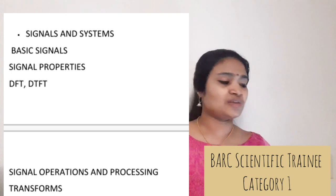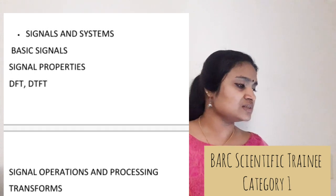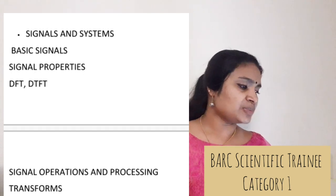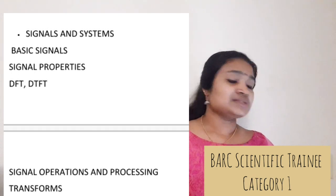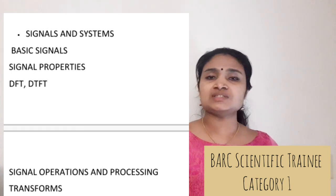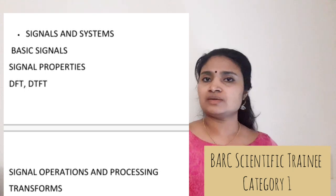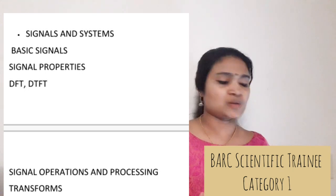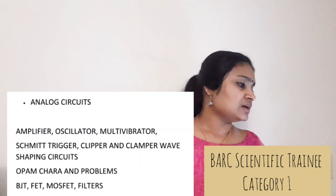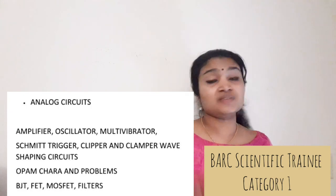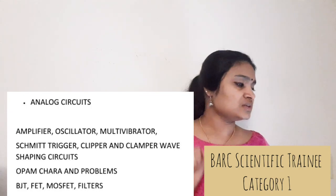From Signals and Systems, only basic things are required: basic signals, signal properties, some signal operations, and transforms. That much is sufficient. Analog Circuits is a very important subject.